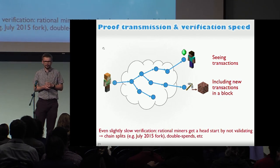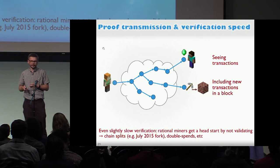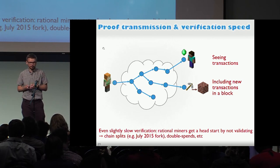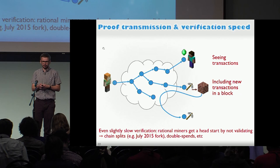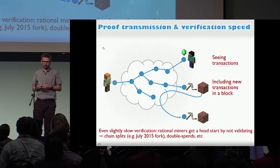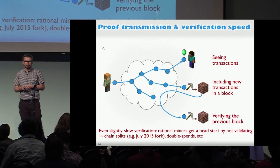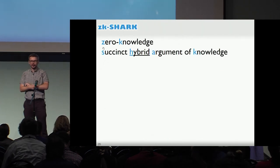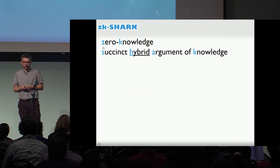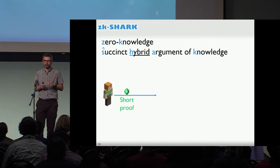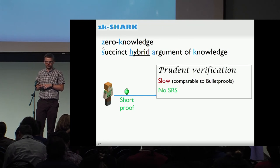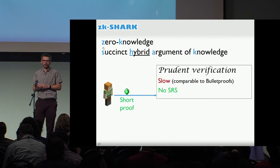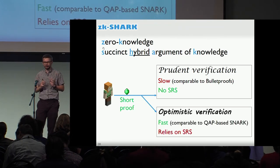This has happened before in Bitcoin. Rational miners do this because they get a head start - why verify if most likely it's going to be OK? Moreover, people will build upon your block and mine another invalid block. So in this work, we present a system called ZK-SHARKs - Succinct Hybrid ARguments of Knowledge - which are short proofs with a dual verification mode. You can either verify them prudently, which is linear-time verification just like Bulletproofs but with no SRS.